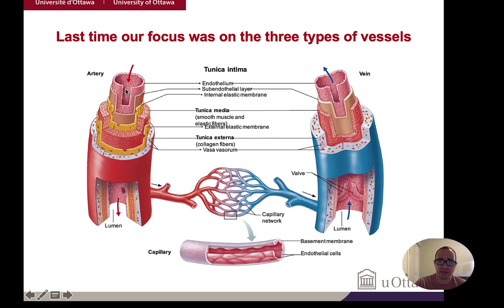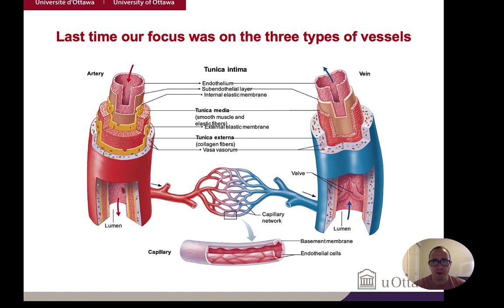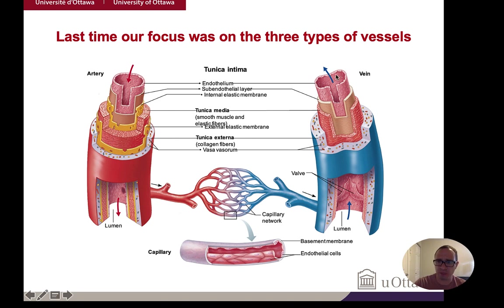Arteries and veins, although similar in structure, differ in the amount of each layer. Arteries have thicker walls overall and a narrower lumen — the interior area in contact with the blood. Veins have a larger lumen, and we talked about these being called capacitance vessels. They contain up to 60% of the total blood in the body at any one time.